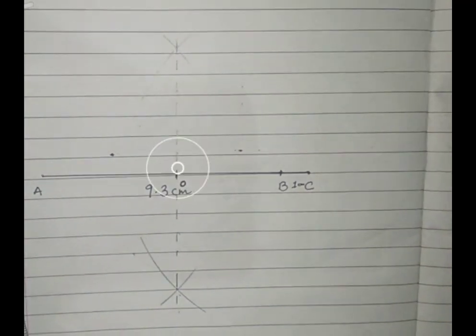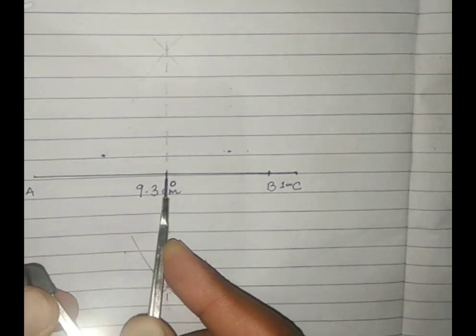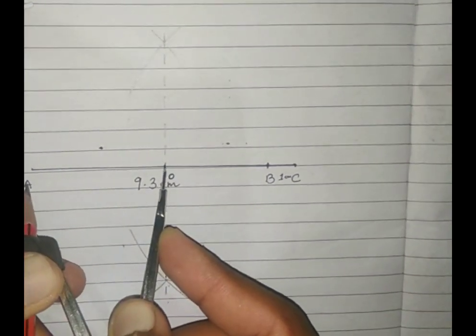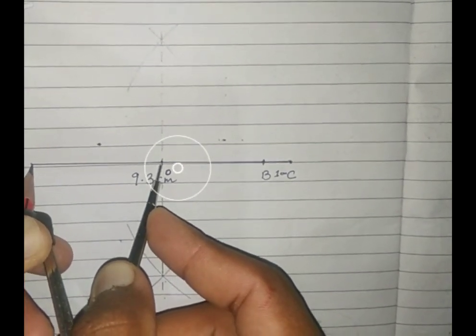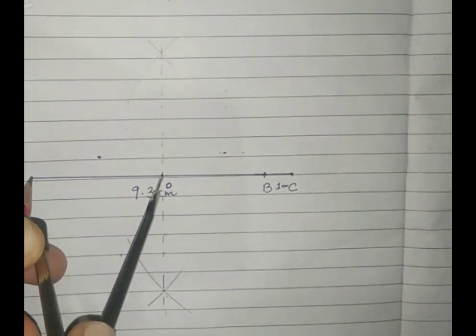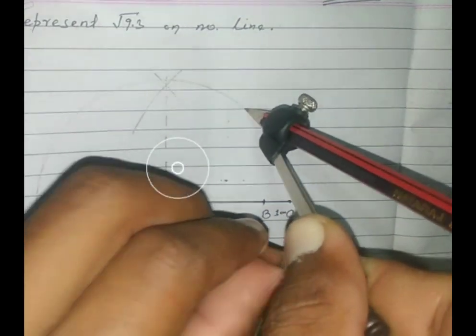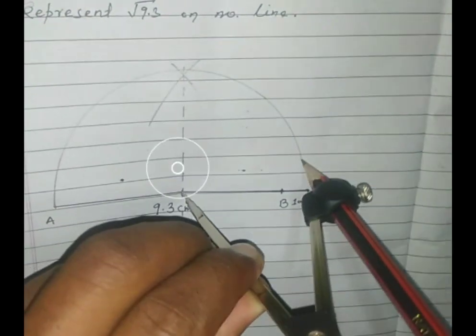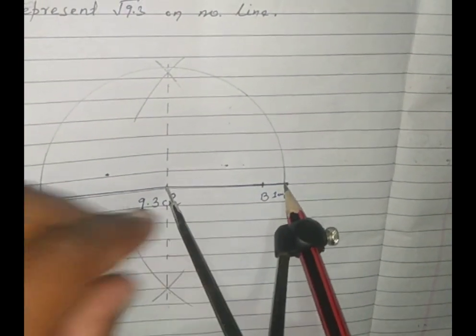Now take OA as radius. Now I am taking OA as radius and drawing a half circle, drawing a half circle which will exactly meet on the point C.